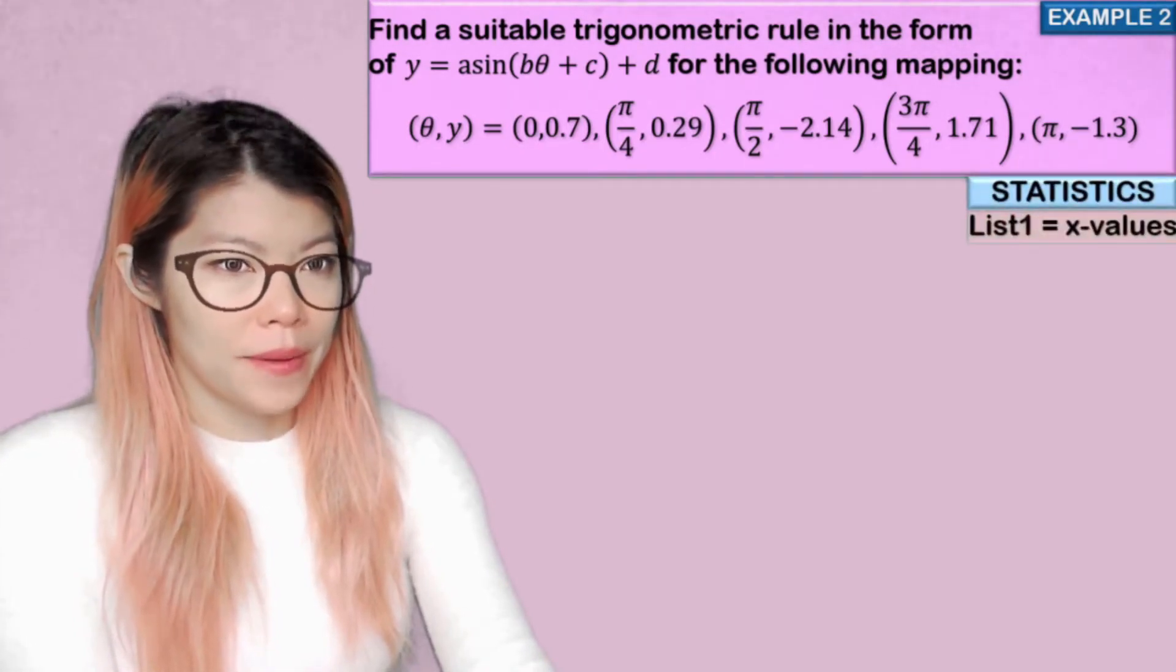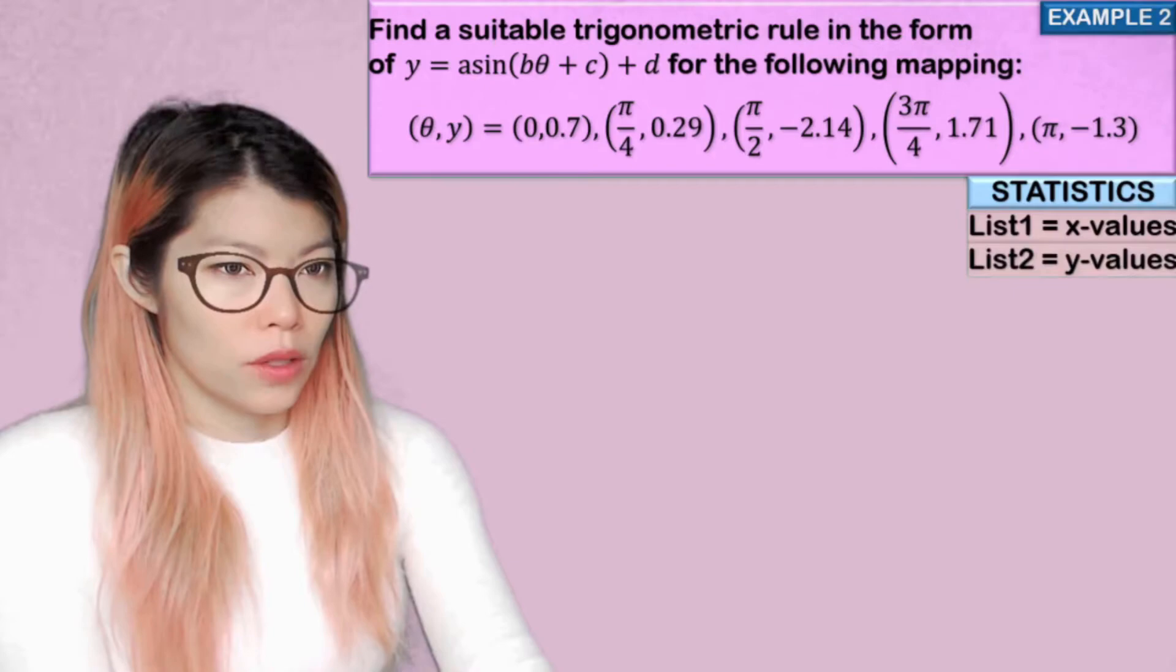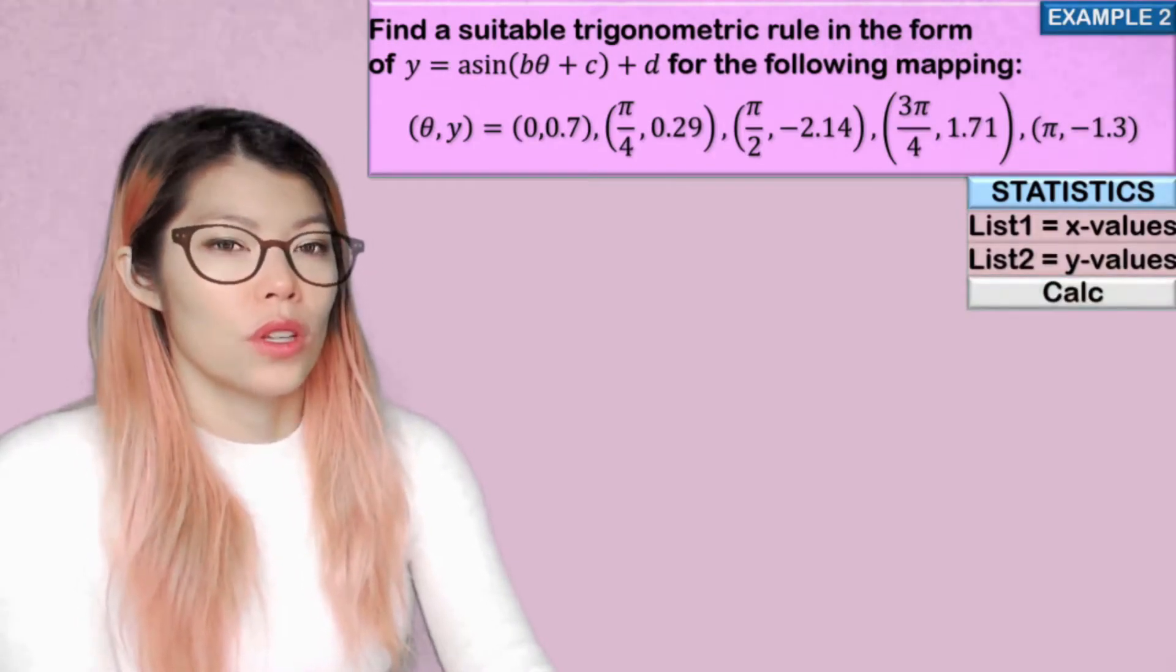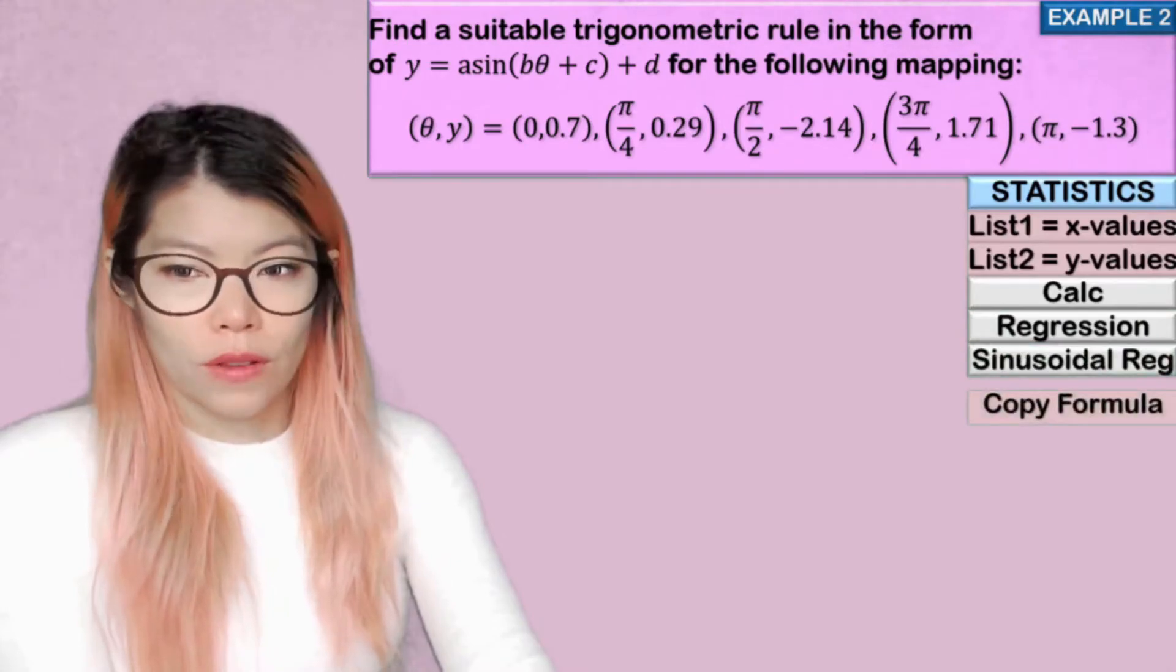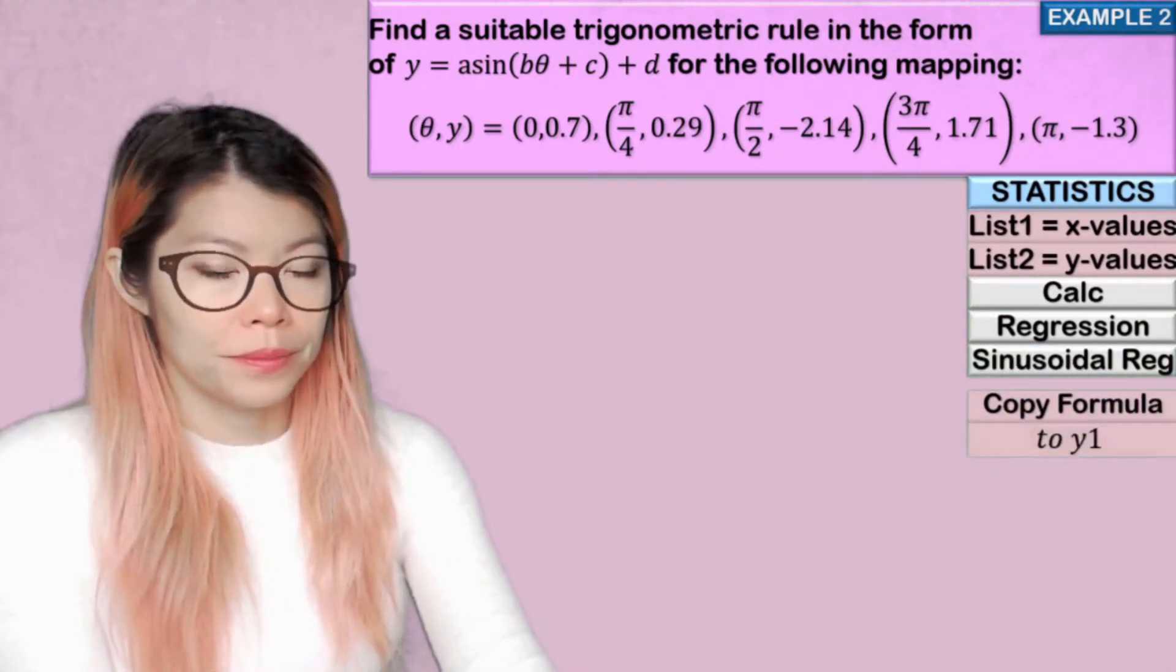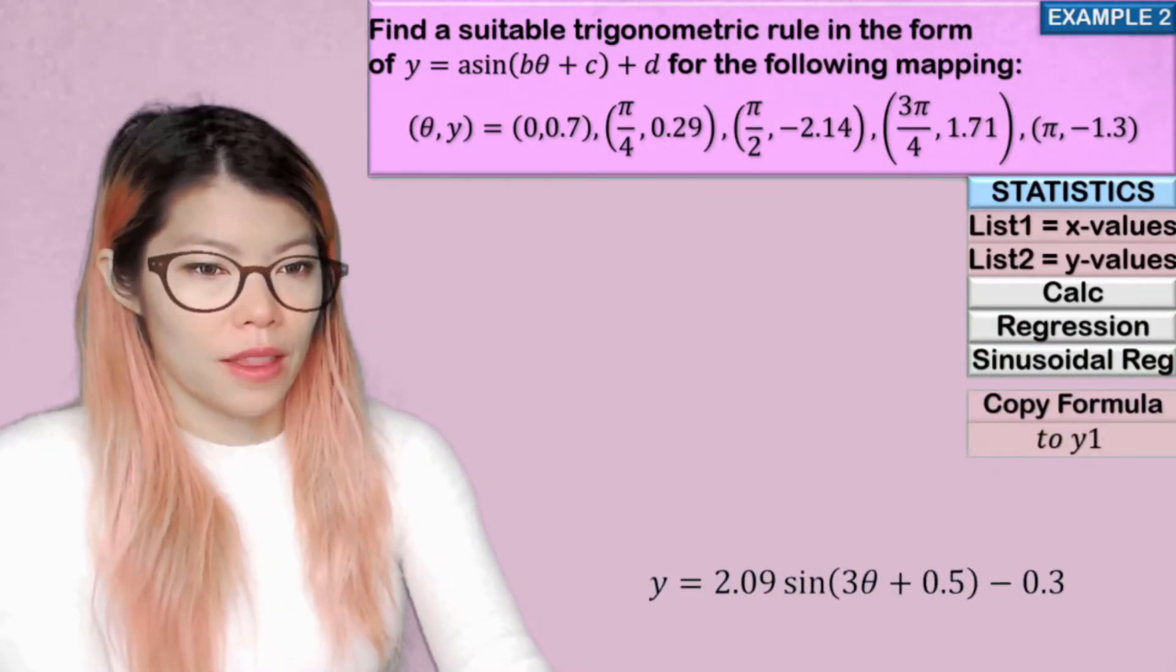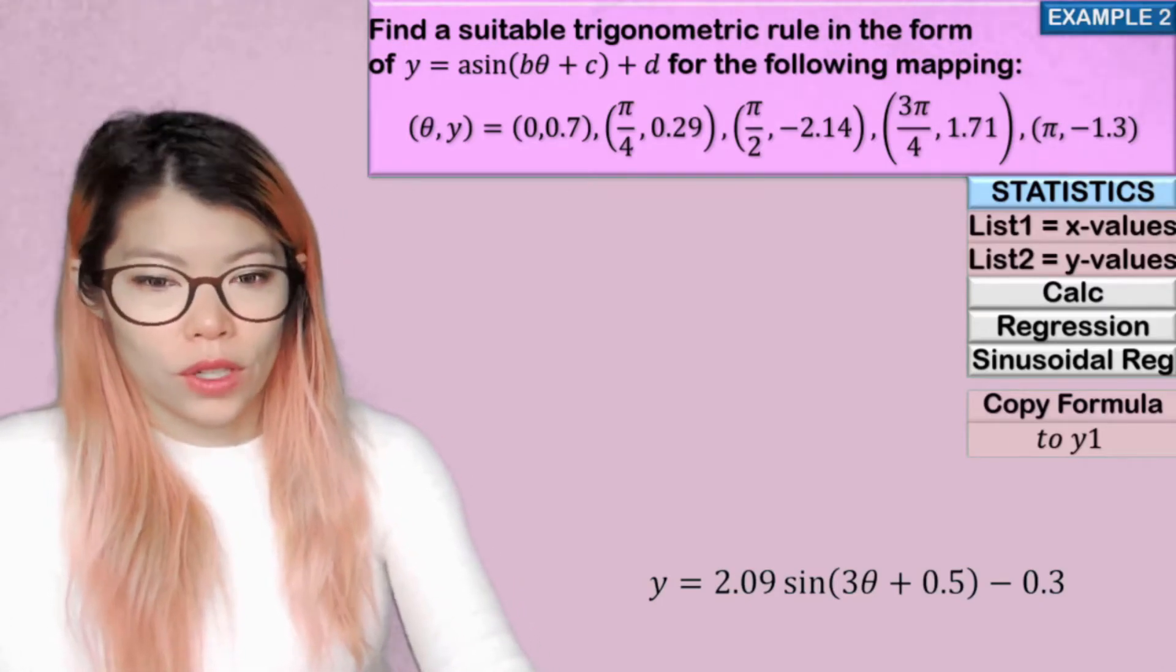We're going to use statistics this time. And we're going to put the values in list one and list two. So the x values in list one, the y values in list two, and we're going to use the following buttons. And we're going to get that equation. So let's have a look.